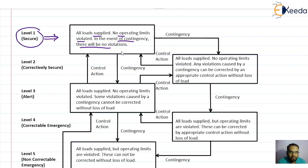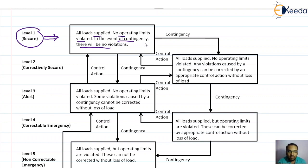If the power system is operating in level one, it can sustain credible contingencies — up to a certain limit. If the contingencies are severe, there is a possibility that the system may not sustain those contingencies. If the contingency limits increase, the system will fall out of level one — the secure level — and jump to level two.